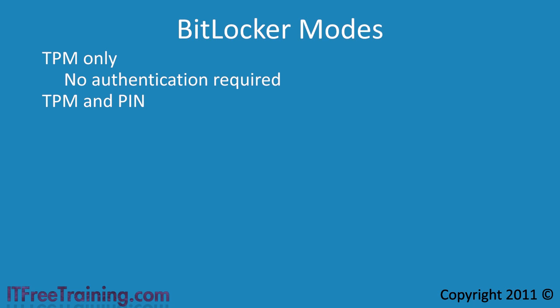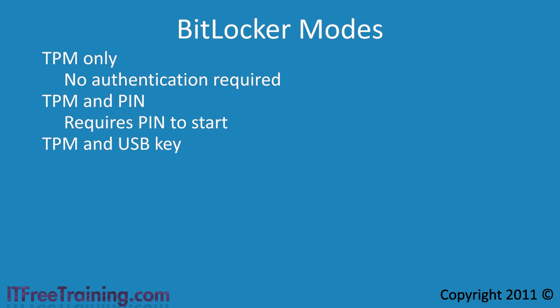The next mode is TPM with a PIN. When the computer is started up, the user is prompted for a PIN; without this PIN the computer cannot start. The next form of security is TPM with a USB key. Rather than trying to remember a PIN, you can store a key on a USB key that is read during boot up. If the computer is always on, you could store the USB key in a safe. If the computer crashes or needs to be rebooted, you could get the USB key out of the safe and then use it to start the computer.